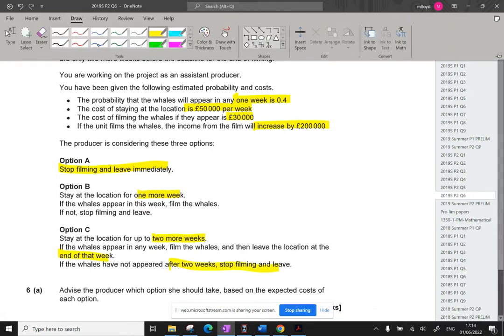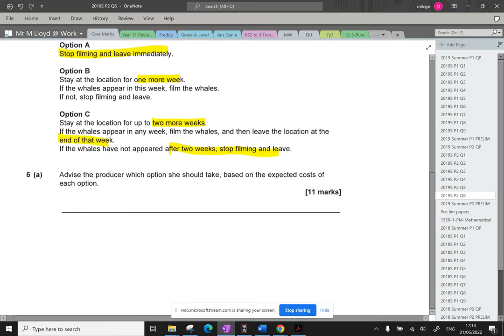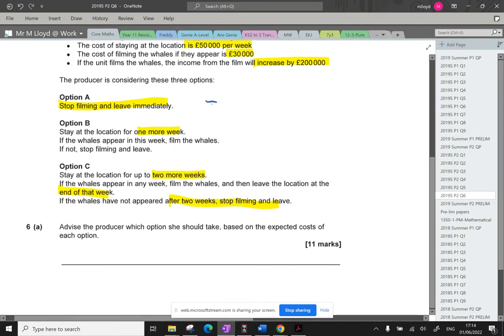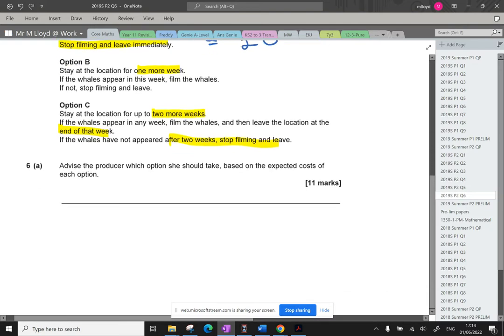Option A costs zero. There is a cost of nothing, there is no extra income. It's pack up and leave. Option B. So B is going to be whales appear or they don't appear.